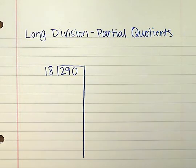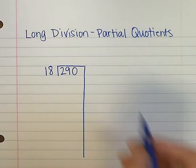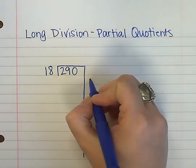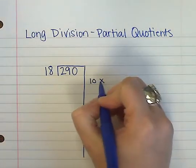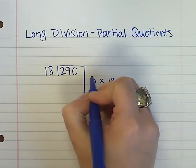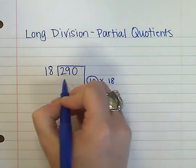I don't know what it is yet, but I do know that I could possibly start with 10 groups of 18, because that's an answer I could find in my head. 10 times 18 is 180.